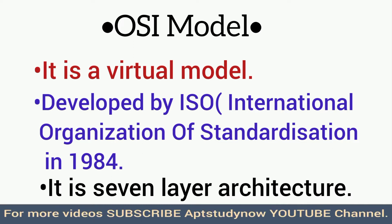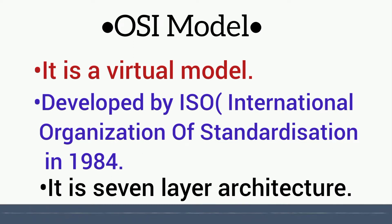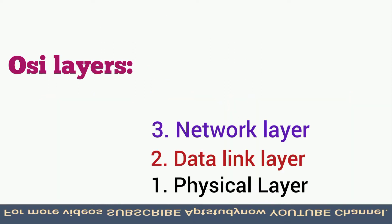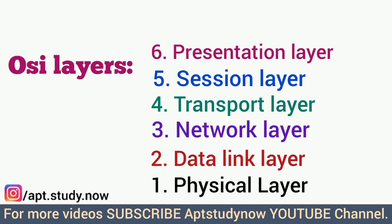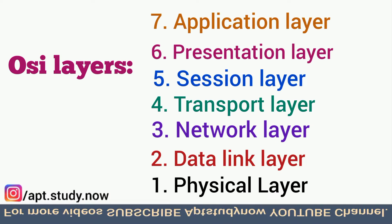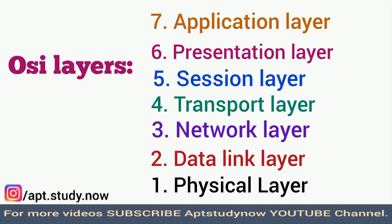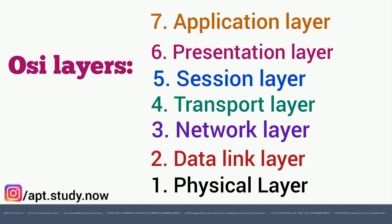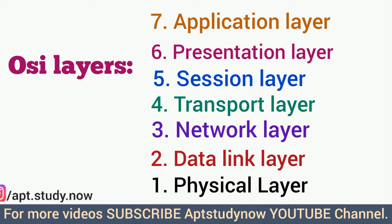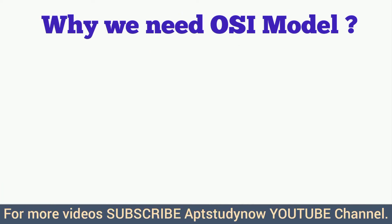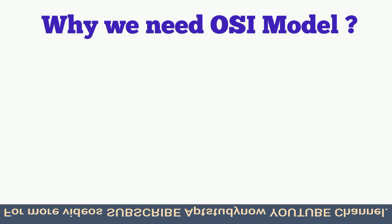It is a seven-layer architecture because it consists of seven layers. We will discuss all the layers in this video — from physical layer, data link layer, network layer, up to the application layer.